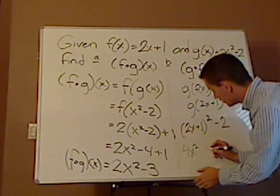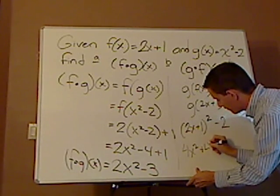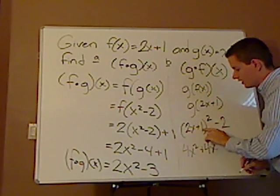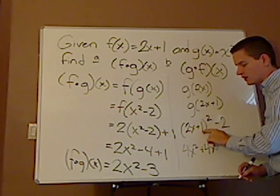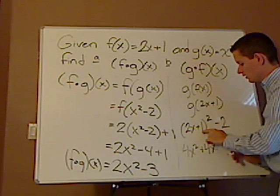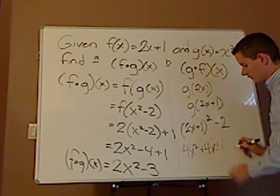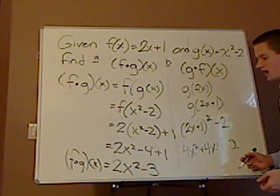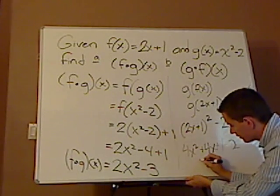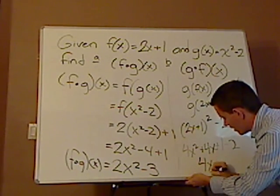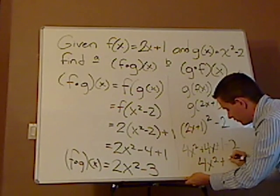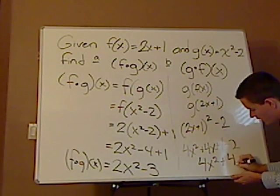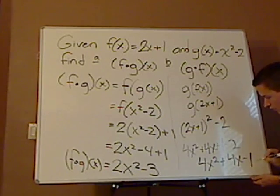So plus 4x. And then your last term is going to be 1 squared. So you get 4x squared plus 4x plus 1 minus 2, which gives you 4x squared plus 4x minus 1.